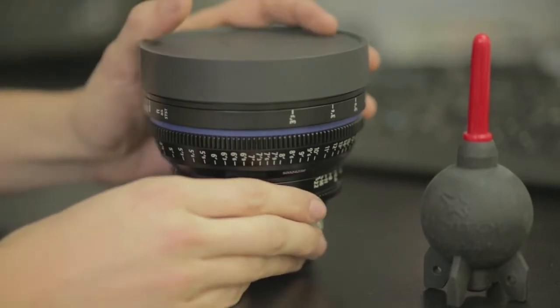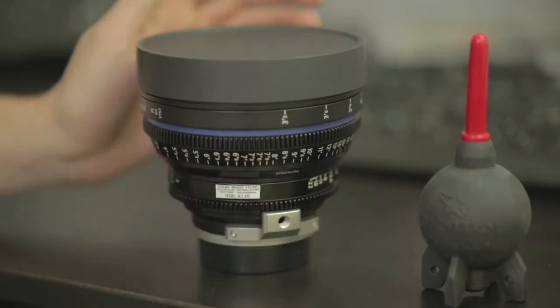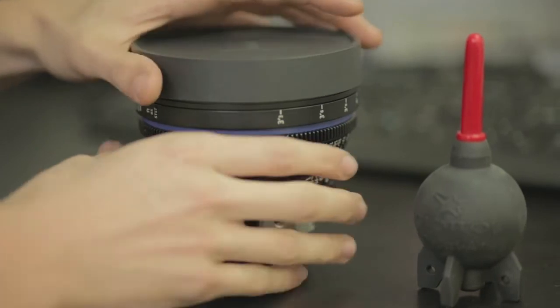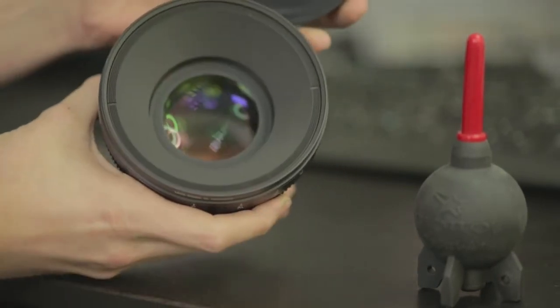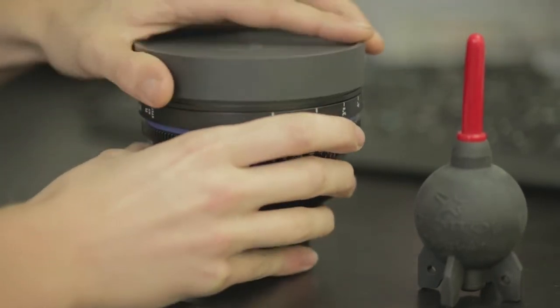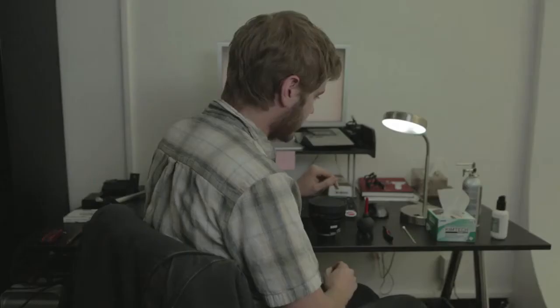So what we have here is a Zeiss CP2 lens that just came back from an order, so it's got a little bit of a dirty front that we're going to clean. The tools we're going to use, in order of how often I use them, are a manual air blower,